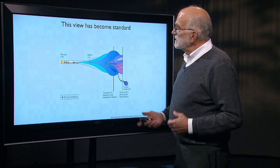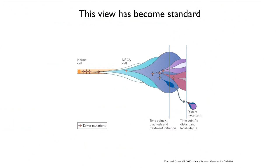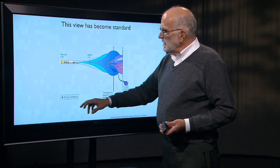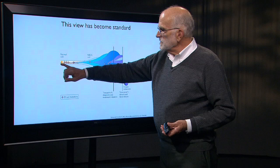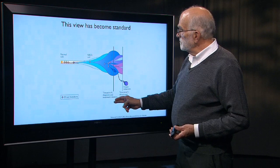That view of clonal evolution in cancer is now standard. A paper in Nature Reviews Genetics from 2012 shows the width of the figure representing how many cells are in the population, so you can see the growth of the tumor. Time is on the x-axis, and little stars represent driver mutations occurring. Starting from a normal cell, we get five driver mutations and some clonal expansion, at which point the tumor has become big enough to be diagnosed and treatment is initiated.